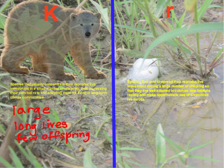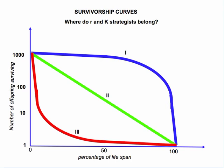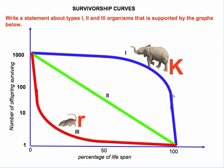K selected species are large and long-lived with few offspring. R strategists, on the other hand, tend to have short lives, are generally small, and are very reproductive. Elephants, which don't have many offspring, take good care of them and live very long — these are K strategists. Mice have many offspring, but many die at a very early stage, with only a few living to full lifespan — these are R strategists. There is also an in-between type, sometimes known as the C strategy.